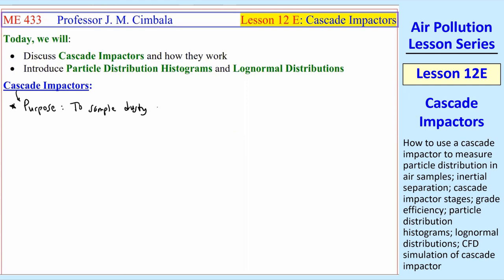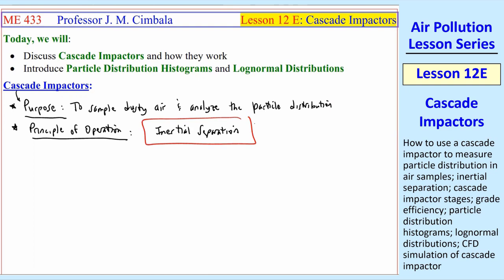So first, the purpose. The purpose is to sample dusty air and analyze the particle distribution. There are other instruments that measure mass of particles and mass distributions and particle number distributions. The cascade impactor is kind of like the gold standard. It's an old-fashioned technique that has been around for decades. The principle of operation is inertial separation, what we've been talking about.